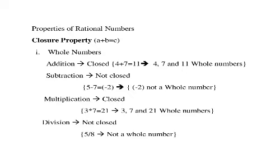The numbers 4, 7, and 11 are whole numbers, so whole numbers are closed under addition. For subtraction, whole numbers are not closed under subtraction. For example, 5 minus 7 gives the answer minus 2. We know minus 2 is not a whole number — minus 2 is an integer value.